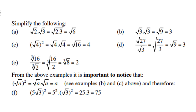Let's look at the first example (a). If we have square root of 2 times square root of 3 — the same type of surd — it can be written as square root of 2 times 3, which is square root of 6. And remember, you can also reverse this by splitting square root of 6 into square root of 2 times square root of 3.